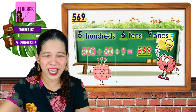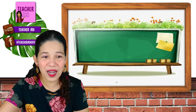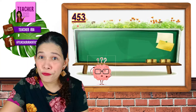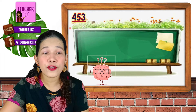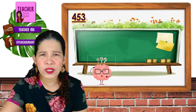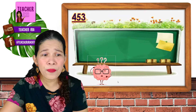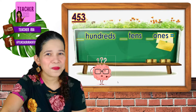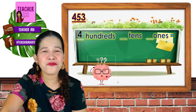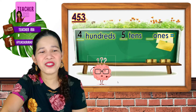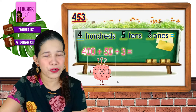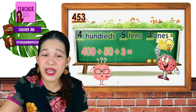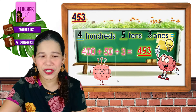Very good, children! And the last one. The number is 453. Let's find out how many 100s, 10s, and 1s are there. How many 100s? You got 400s, 5 tens, and 3 ones. That's 400 plus 50 plus 3, and the number is 453.